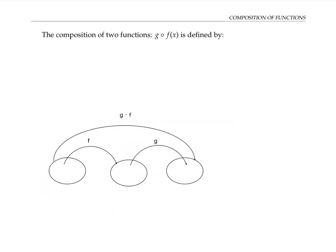The composition of two functions, written g with a little circle f of x, is defined as follows: g composed with f of x is g evaluated on f of x. We can think of it schematically in this diagram — f acts on a number x and produces a number f of x, then g takes that output f of x and produces a new number g of f of x. Our composition g composed with f is the function that goes all the way from x to g of f of x.